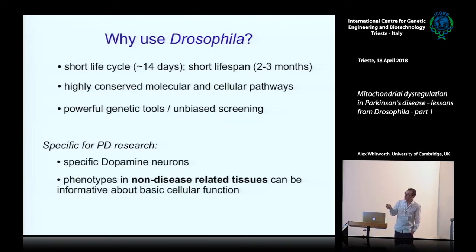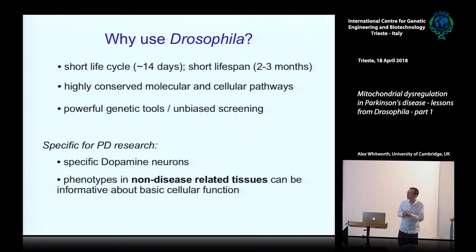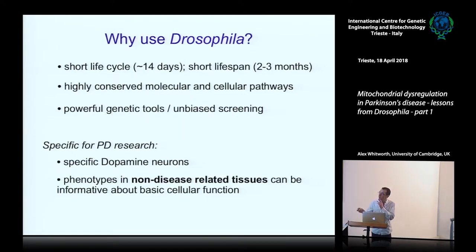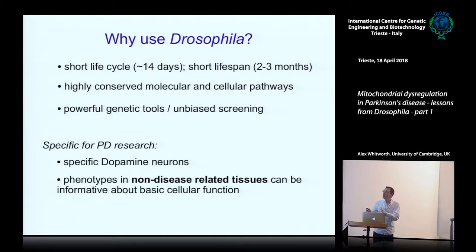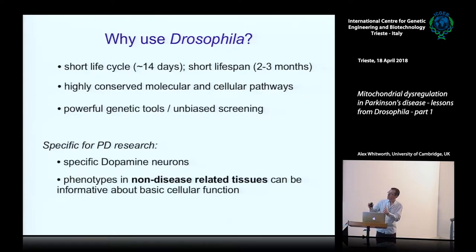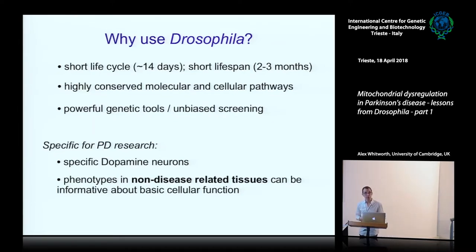Specifically for Parkinson's: the fly brain has specific dopamine-expressing neurons, the same type that are primarily affected in the disease. An important point is that when we're looking at flies and our genetic phenotypes that aren't obviously mirroring a disease context, non-disease-related tissues can be tremendously informative about the basic cellular function of the genes that we're interested in. You'll see the relevance of this as we go through.